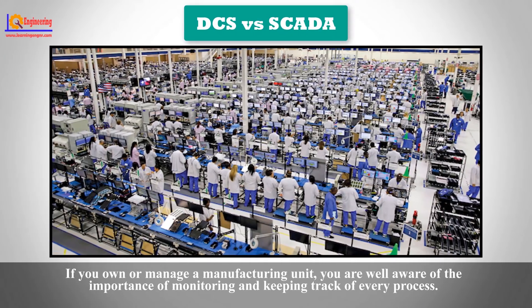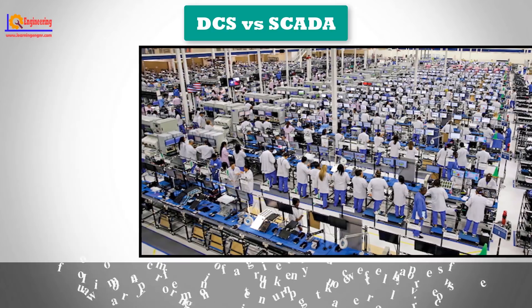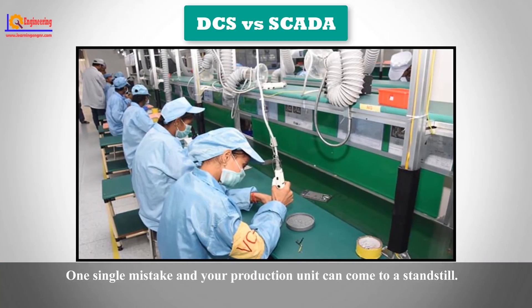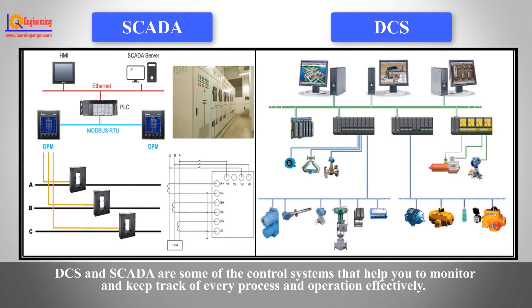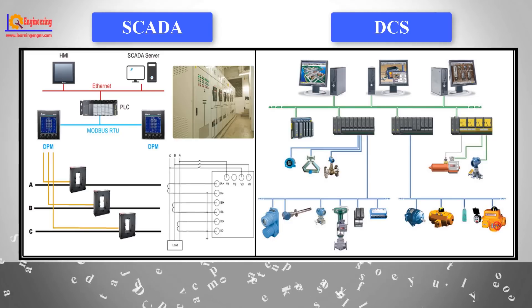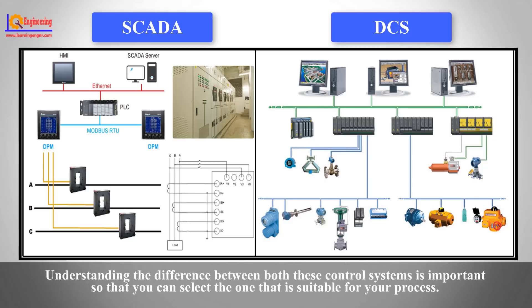If you own or manage a manufacturing unit, you are well aware of the importance of monitoring and keeping track of every process. One single mistake and your production unit can come to a standstill. DCS and SCADA are some of the control systems that help you to monitor and keep track of every process and operation effectively. Understanding the difference between both these control systems is important so that you can select the one that is suitable for your process.